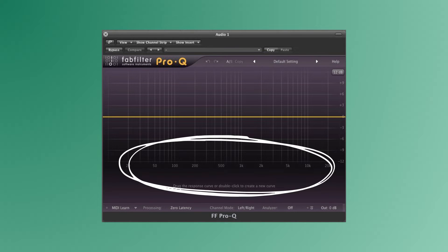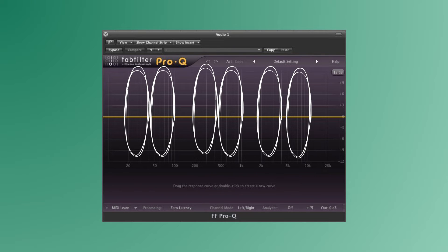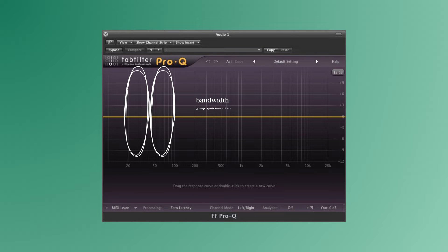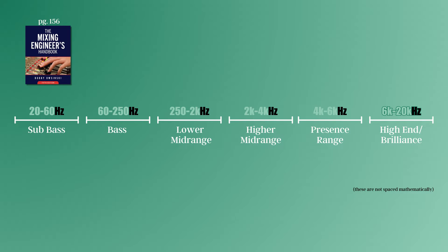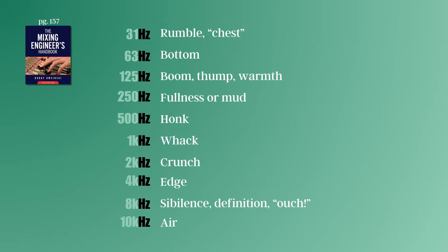The spectrum of frequencies on the horizontal axis of this graph can be grouped into different bandwidths. There's an inconsistency on the internet with the ranges of each bandwidth, but here are the numbers according to the Mixing Engineer's Handbook by Bobby Ozynski: sub-bass is 20 to 60 Hz; bass is 60 to 250 Hz; lower mid-range, 250 to 2,000 Hz; higher mid-range, 2,000 to 4,000 Hz; presence range, 4,000 to 6,000 Hz; and high-end, or brilliance, from 6,000 to 20,000 Hz.